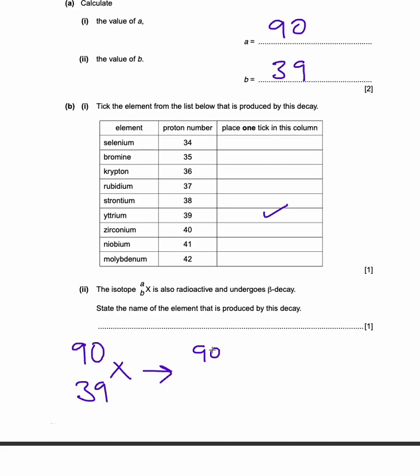So if it undergoes beta decay, we have a mystery element here with a mass of 90. And we know that just like before, the proton number needs to be 40 in order for it to undergo beta decay because we've got a proton number of minus one there. So this side adds up to 39.